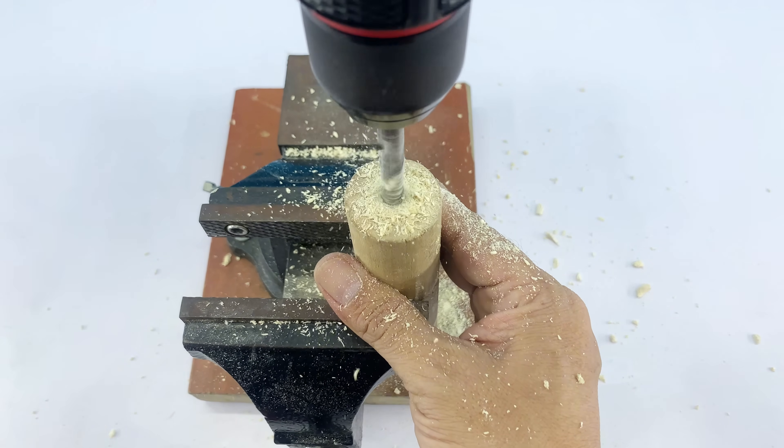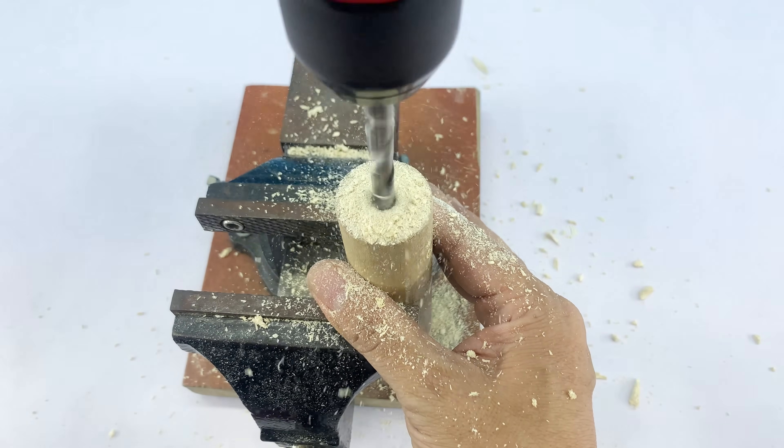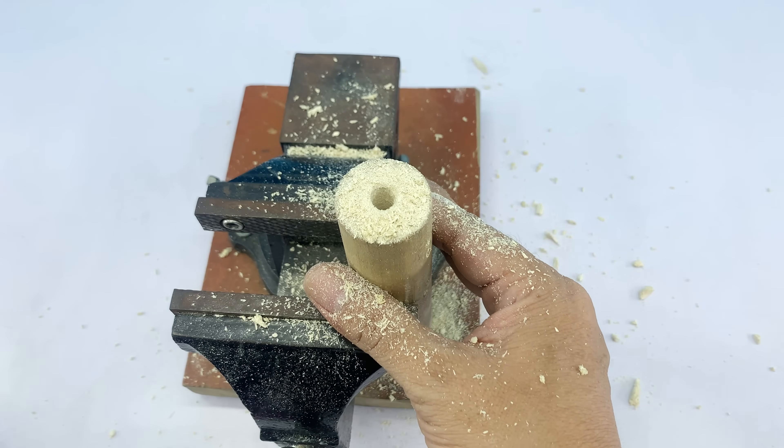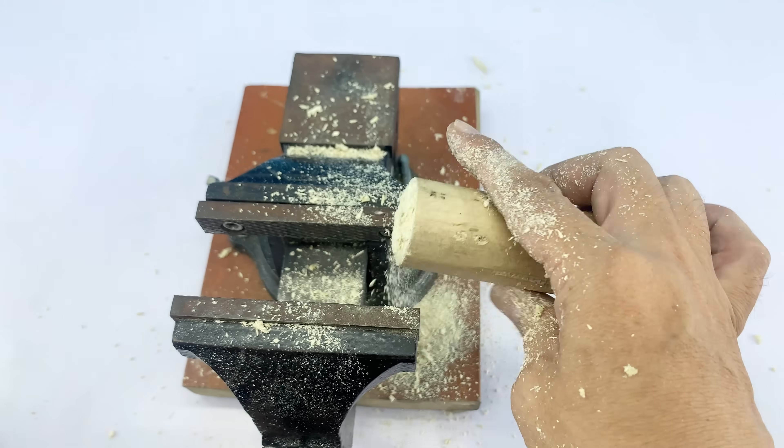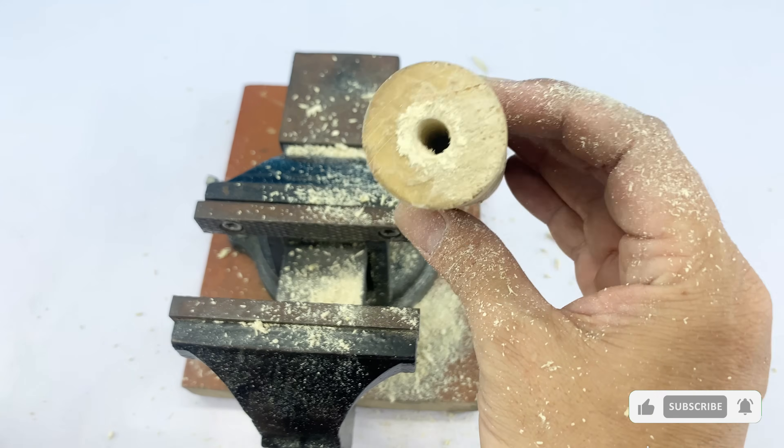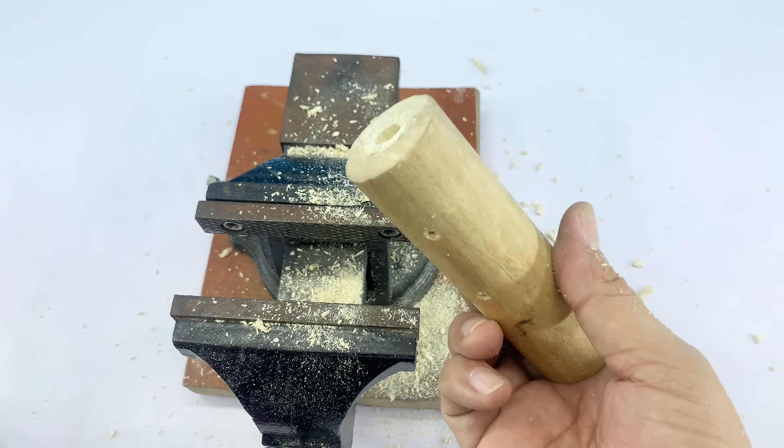Here we go. Using one end, I drill the hole slightly larger to make it easier to fit and secure the spark plug's threads into the wooden handle without it being too tight or loose.